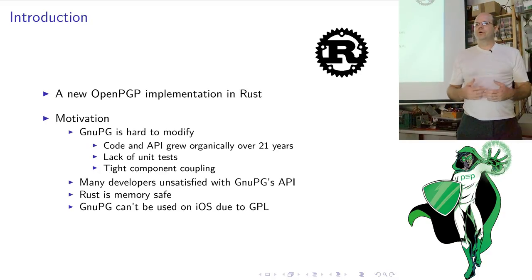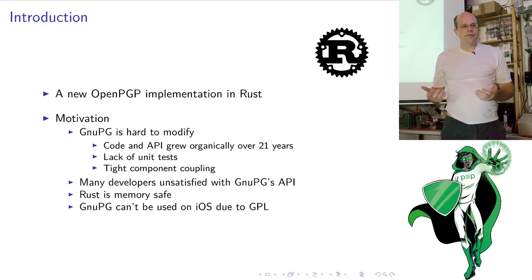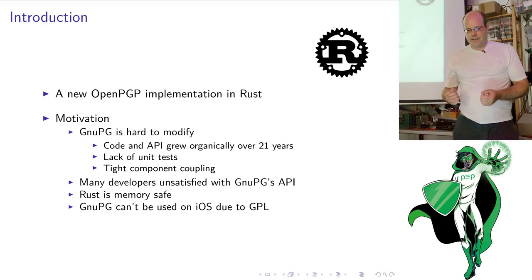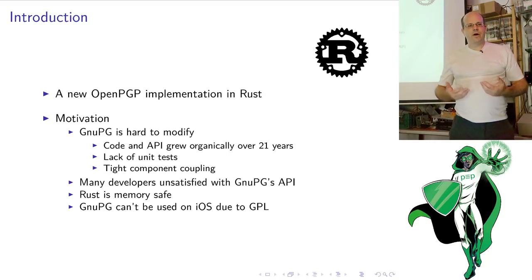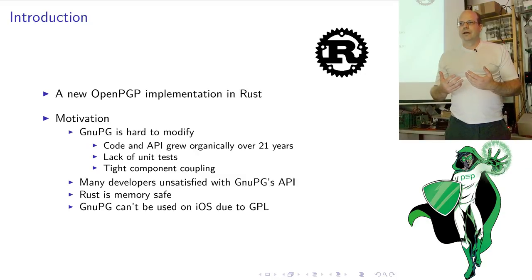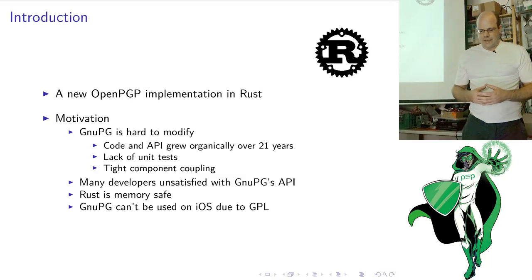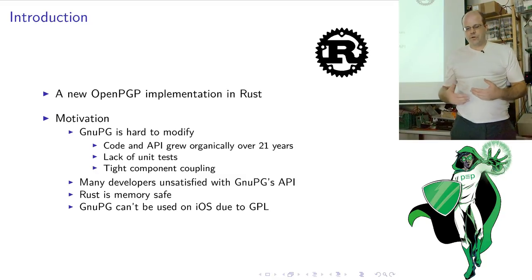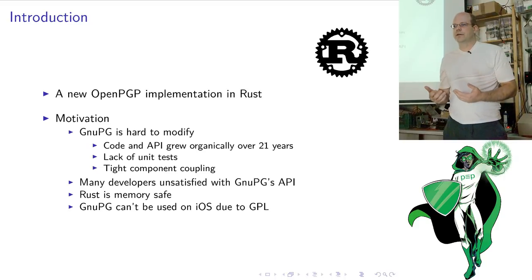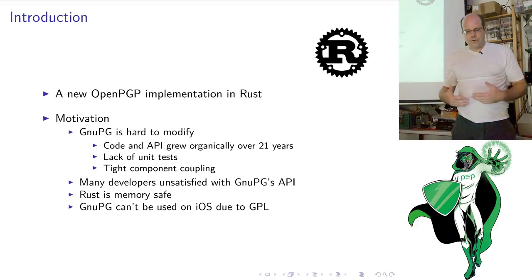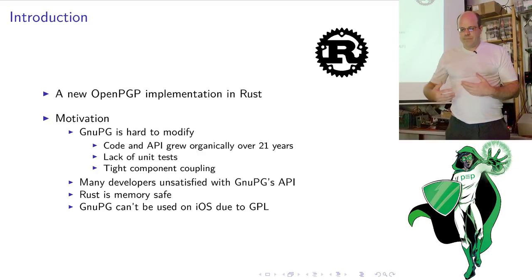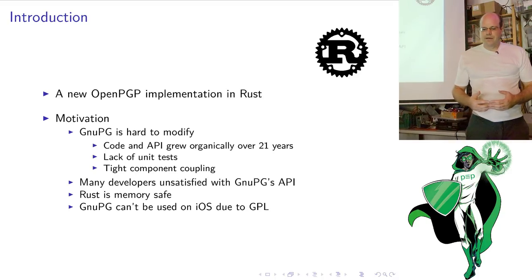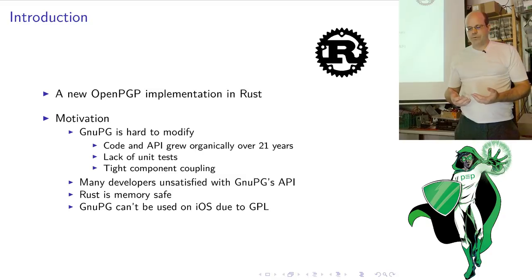The motivation for doing this new implementation — why the status quo is not good enough — is based on our experience with GnuPG. GnuPG, in our opinion, is kind of hard to modify, hard to improve. It's stuck a little bit at a local optimum. One reason is that the code and the API have grown organically over the past 21 years, and of course you accrue some technical debt. But what makes it particularly difficult to modify GnuPG is the lack of unit tests and the tight component coupling.